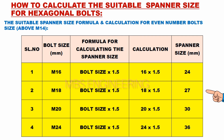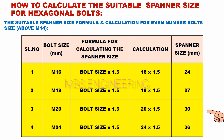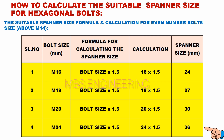The suitable spanner size for bolt size M18 is 27 mm. The suitable spanner size for bolt size M20 is 30 mm. The suitable spanner size for bolt size M24 is 36 mm.